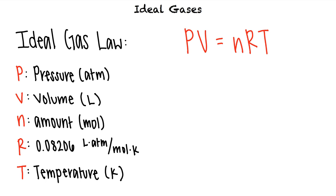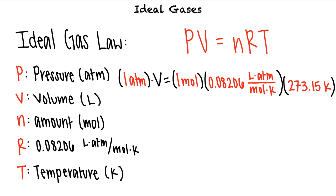If we were to substitute the standard pressure and standard temperature into the equation for one mole of gas, using the gas constant 0.08206 liter times atmosphere per mole times Kelvin, we can solve for V and we see that at standard temperature and pressure, one mole of gas occupies 22.4 liters of space.